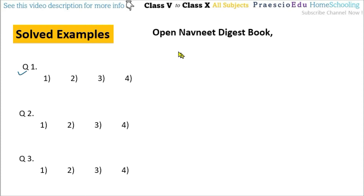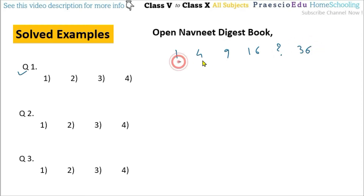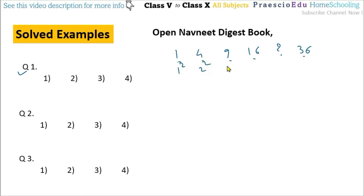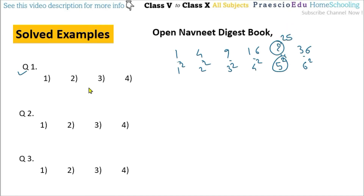If you observe carefully: 1, 4, 9, 16, question mark, and then 36. These are square numbers: 1 is 1 squared, 4 is 2 squared, 9 is 3 squared, 16 is 4 squared. So the question mark is 5 squared, which is 25, and then 6 squared is 36. So 25 is the answer, given in option number 2.